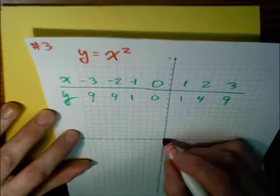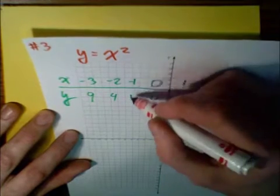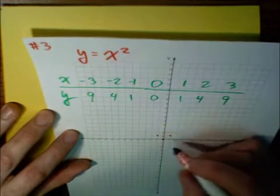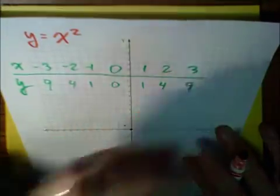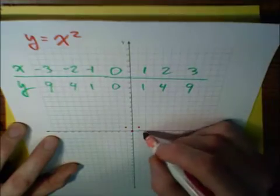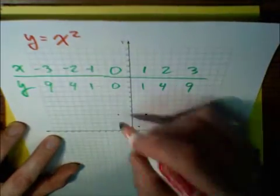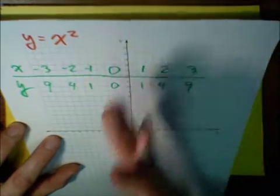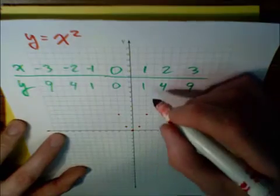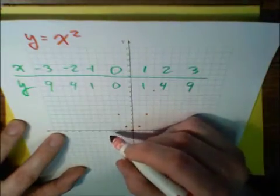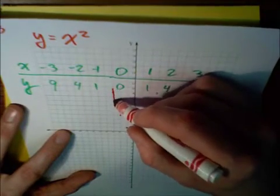Let's start at the vertex, 0, 0. And this is the point 1, 1, and the point negative 1, 1. Now, be careful. This is not a 45-degree angle because we're going to be accelerating upwards. 2, 4 is right here. Here's negative 2, 4. Notice we have symmetry about the y-axis. And lastly, let's do 3, 9, and then negative 3, 9. And if we sketch a graph...